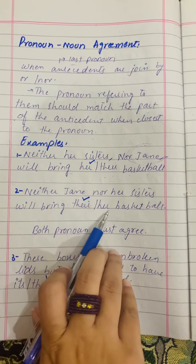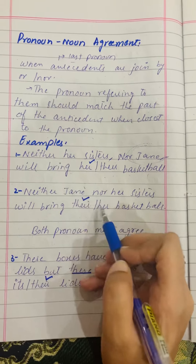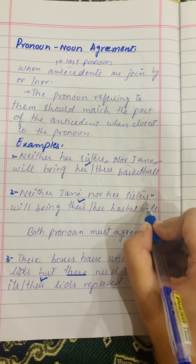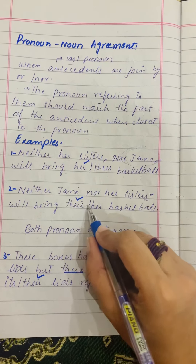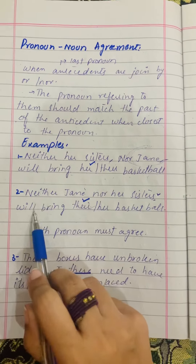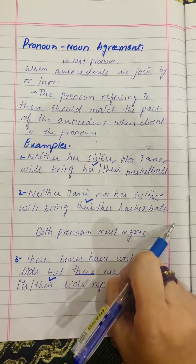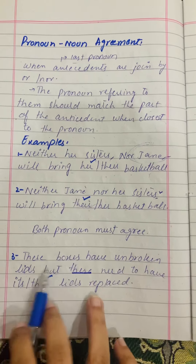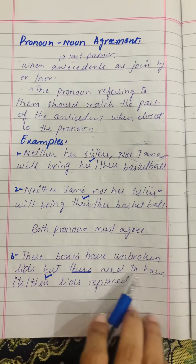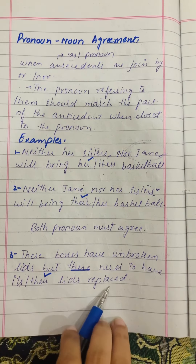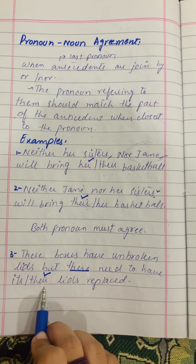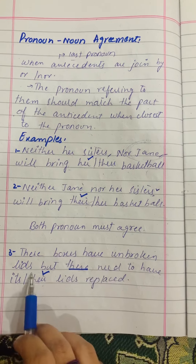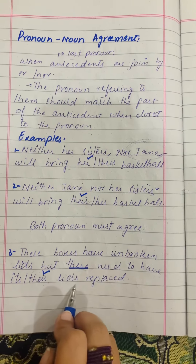Conversely: 'Neither Jane nor her sisters will bring their basketball.' Here 'Jane' is singular but 'sisters' is the last antecedent and is plural, so we use 'their.' Both pronouns must agree with the nearest antecedent. Another example: 'These boxes have unbroken lids, but these need to have their lids replaced' — 'their' is used because 'these boxes' is plural.